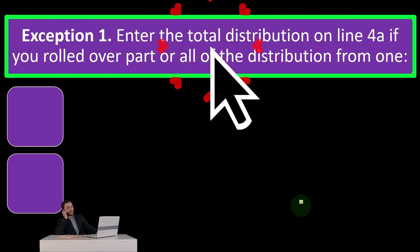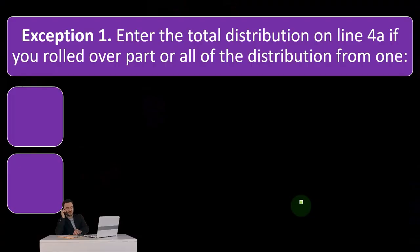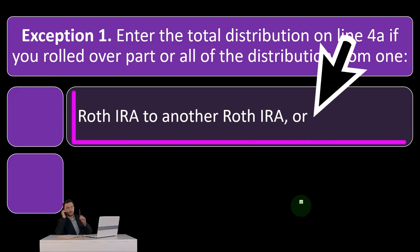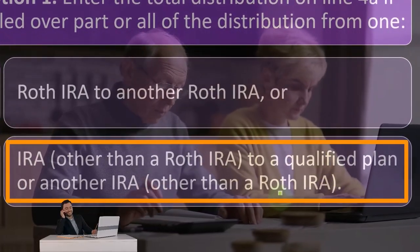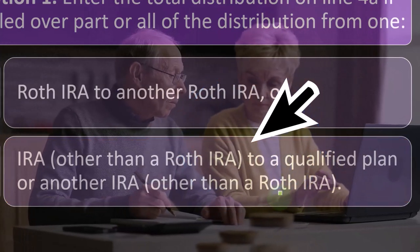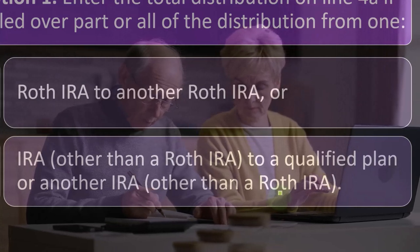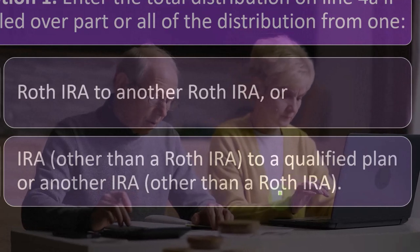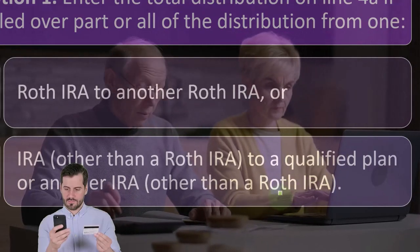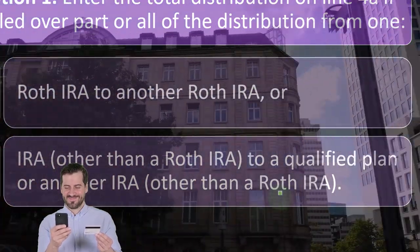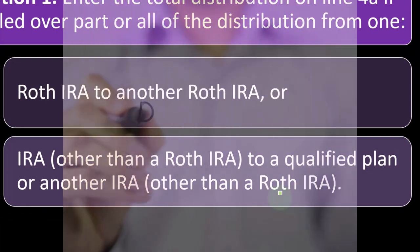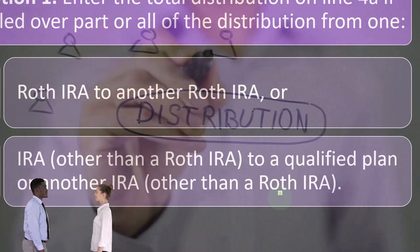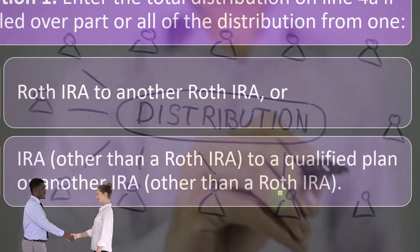Exception one: enter the total distribution on line 4A if you rolled over part or all of the distribution from one Roth IRA to another Roth IRA, or from an IRA other than a Roth IRA to a qualified plan or another IRA. This becomes important with any money under a retirement plan — IRAs or a 401k. If you roll that into another IRA because you want to switch financial institutions, you must be very careful, because if it's shown as you distributing the money and then reinvesting it, you'll get hit with taxes and possibly early withdrawal penalties.